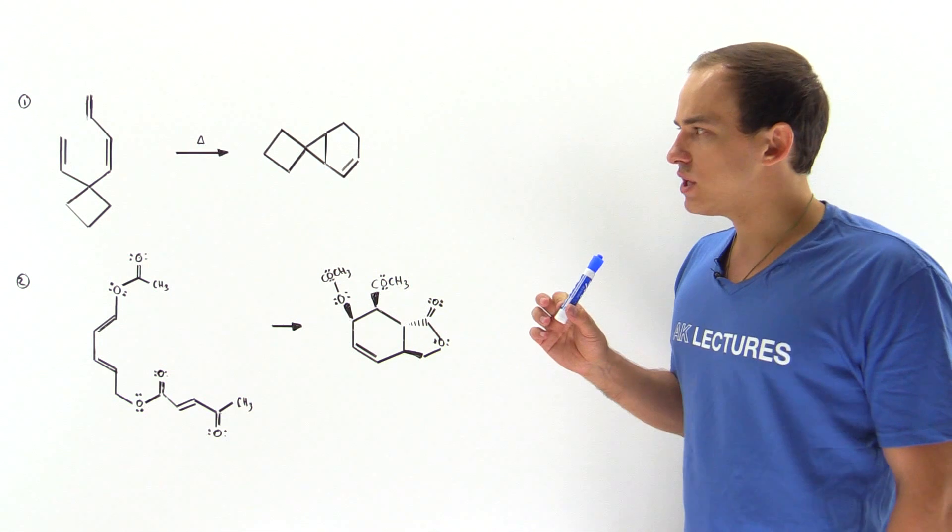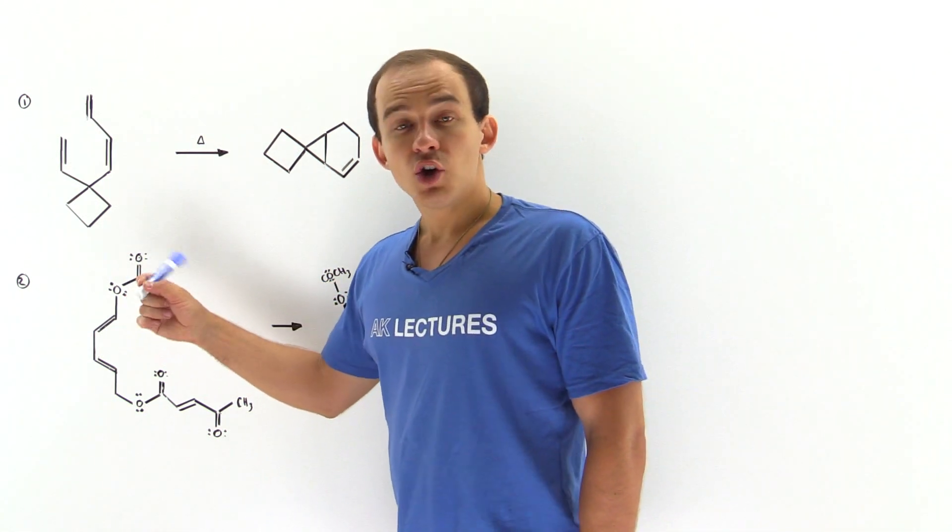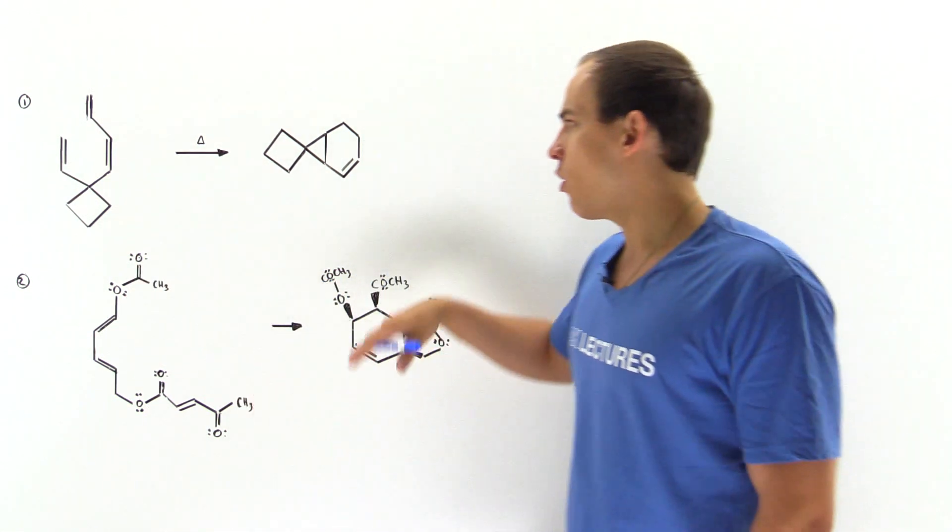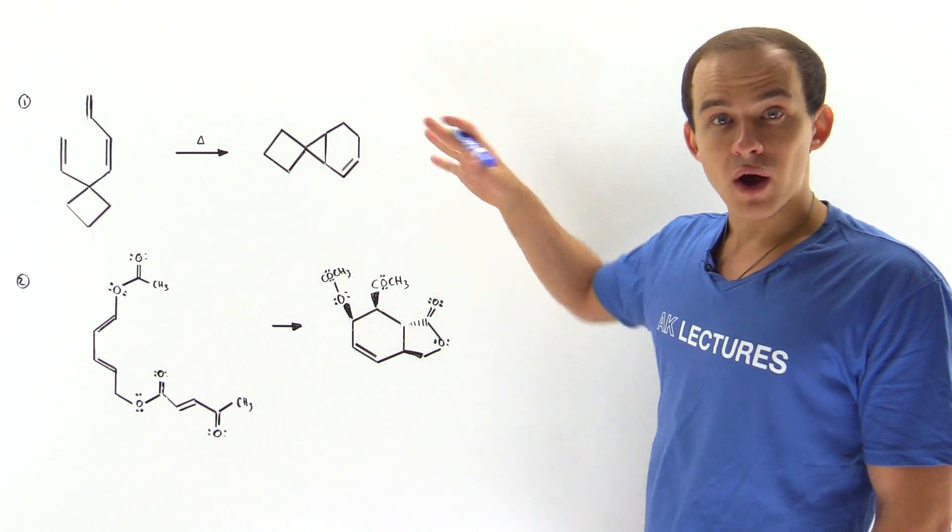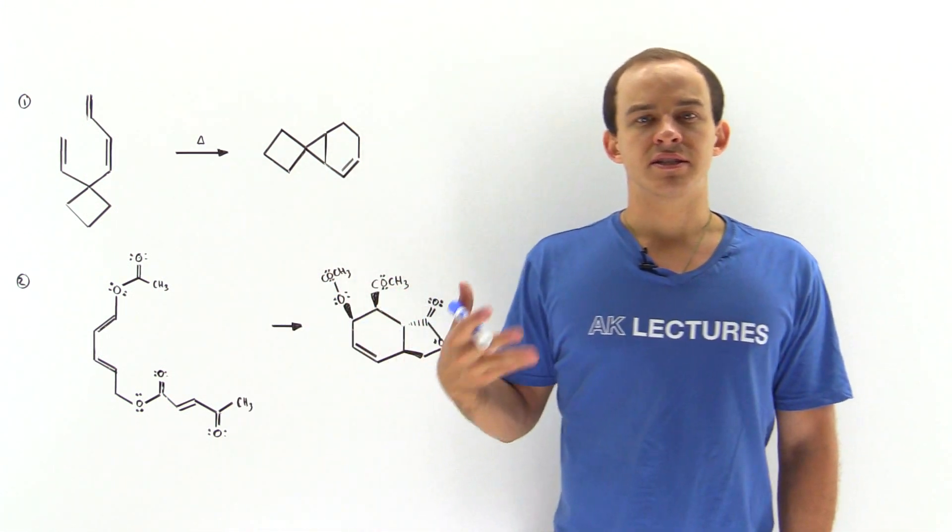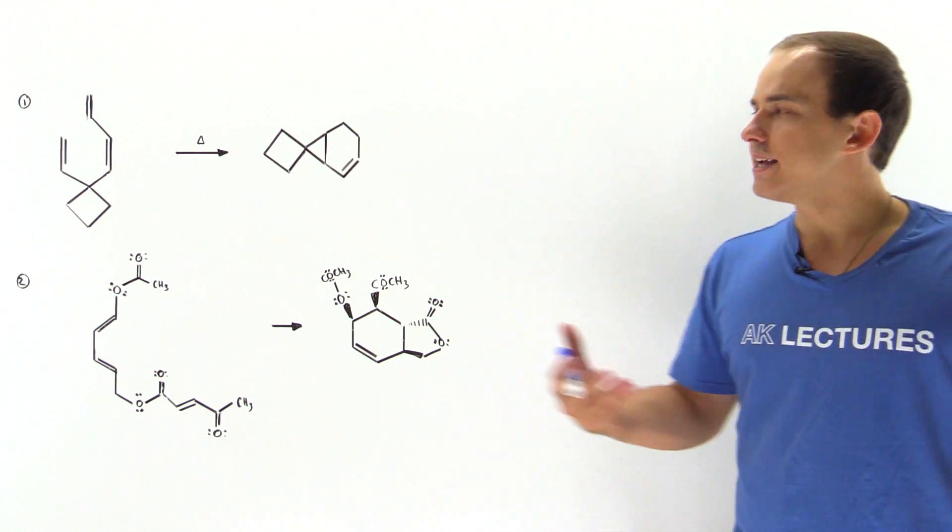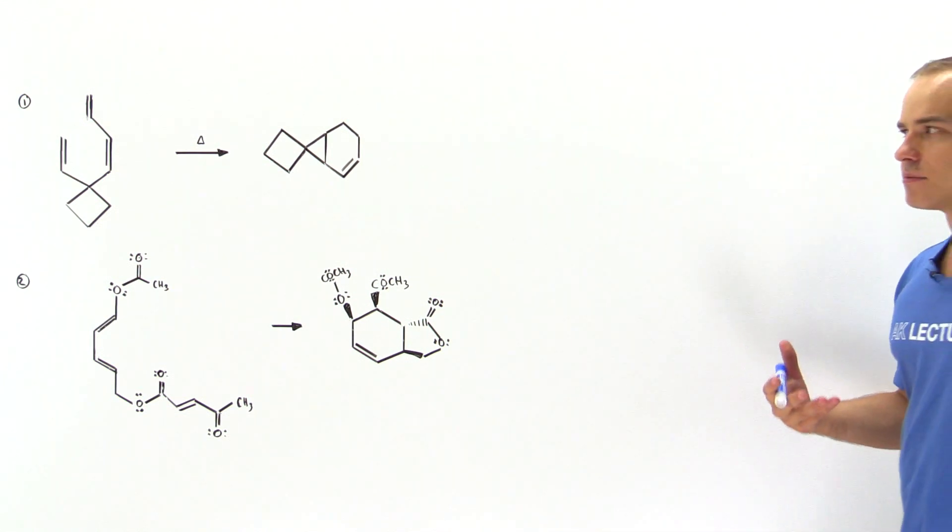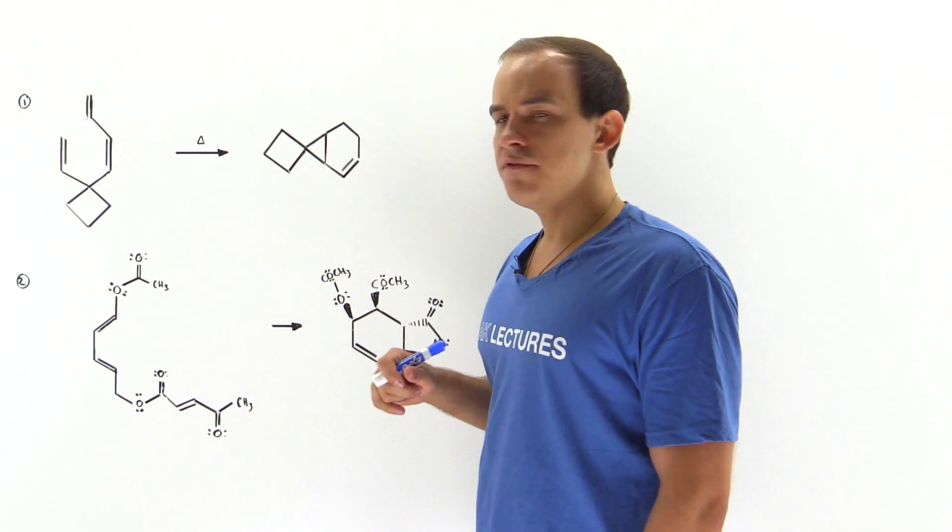In reaction one we have this reactant rearranging itself to form this product. The question is how exactly does this take place? What is the reaction mechanism for the formation of this product?